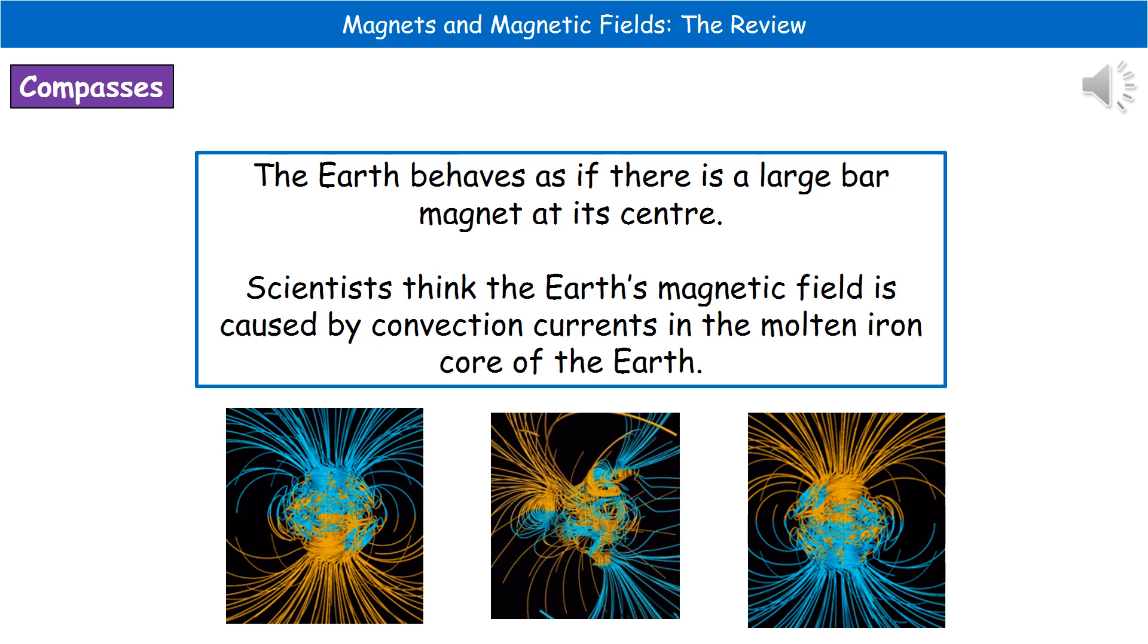And one other theory that's going around at the moment in science is that we're actually in a period where the Earth's magnetic field is in a reversal. So we know from the history of the Earth that it does have these regular reversals every several thousand years. And what we actually find is that we've got this current period where there's some evidence that it might be in the process of reversing at this point in time. And so that's what the other two diagrams are representing at the bottom there.